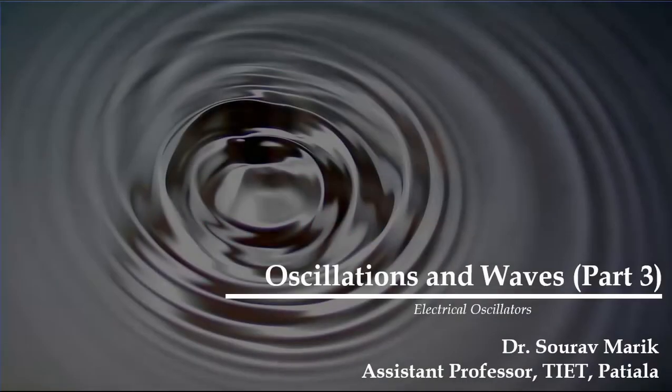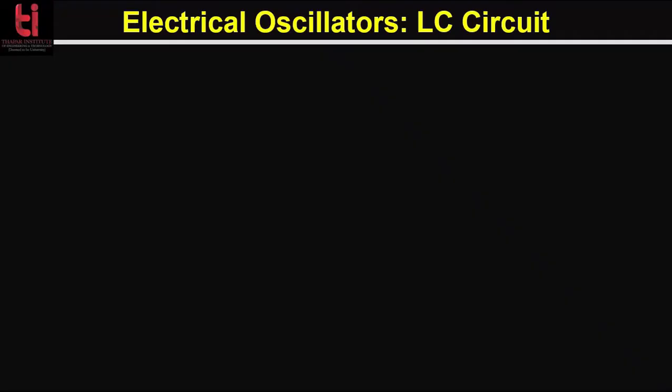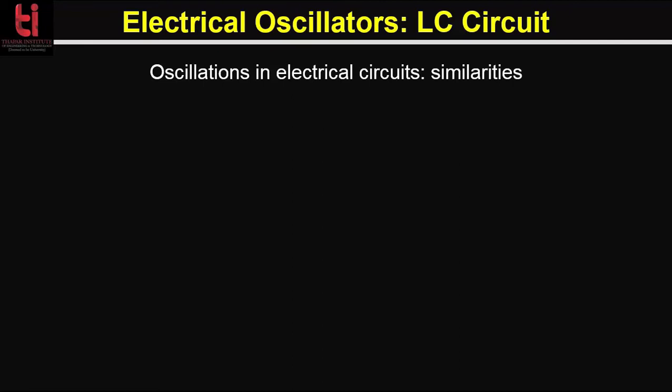Welcome everyone. In this part I will discuss about oscillations in an electrical circuit. In my previous lecture I discussed about simple harmonic motion of the mechanical system. In this lecture we will see that the oscillations of an electrical circuit are described by a differential equation that is identical in form to the differential equation of simple harmonic motion for the mechanical system. So the solution will be identical. Only the physical quantities associated with the differential equations are different. That means when we understand one physical situation we can understand many others.